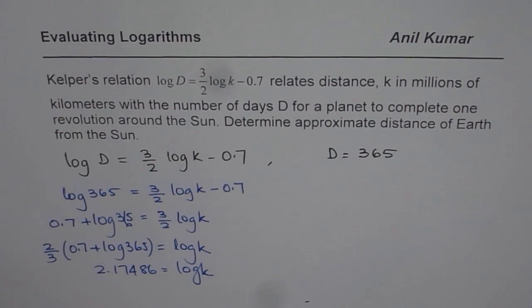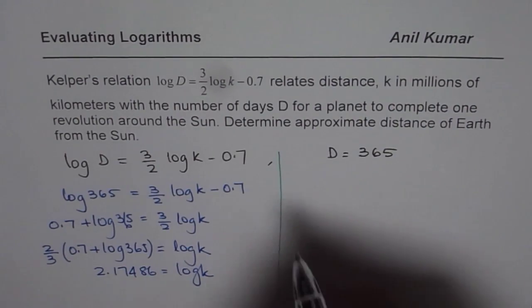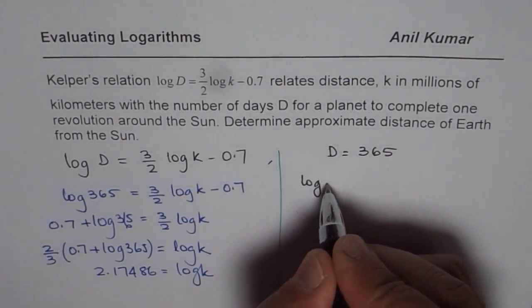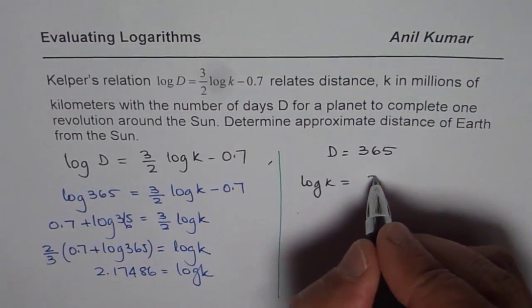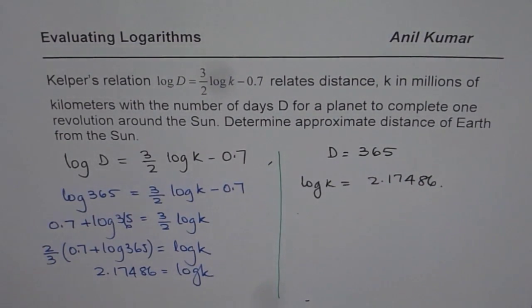Now, how are you going to find the value of k from this value? So we know log k equals 2.17486. Now, from here, how can you find k? That's the next question.